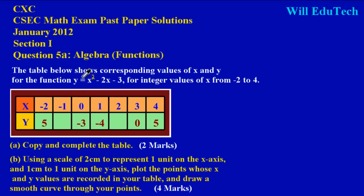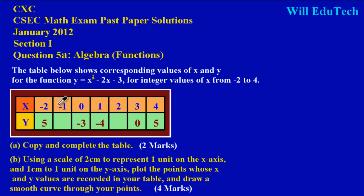The table below shows corresponding values of x and y for the function y = x² - 2x - 3, for integer values of x from negative 2 to positive 4. Integers are both negative and positive whole numbers. Looking at the X row, you can see all the values are integers: -2, -1, 0, 1, 2, 3, 4.